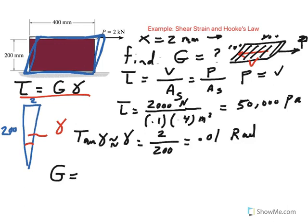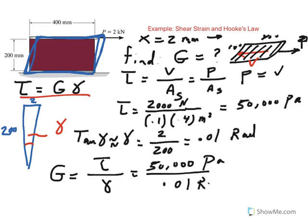So now we can refer to this equation here, tau equals G gamma, and go ahead and solve for the shear modulus or modulus of rigidity. So G is equal to tau divided by gamma. Tau is 50,000 Pascal and our gamma is 0.01 radians, which is dimensionless, so Pascal over radians would be also Pascal. So this happens to be 50 million or 50 megapascal, and that's a property of this polymer block known as the shear modulus or modulus of rigidity.